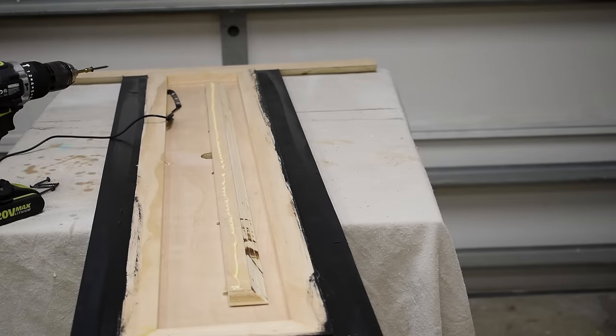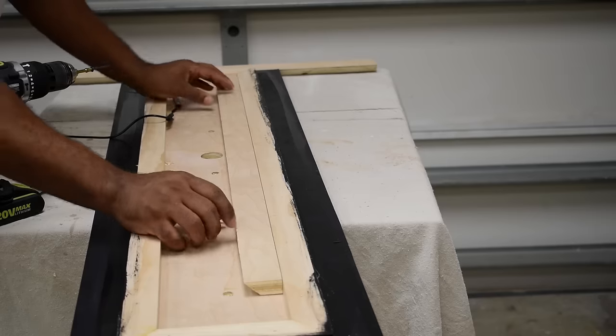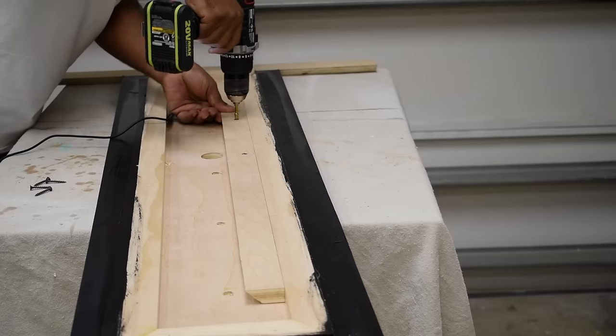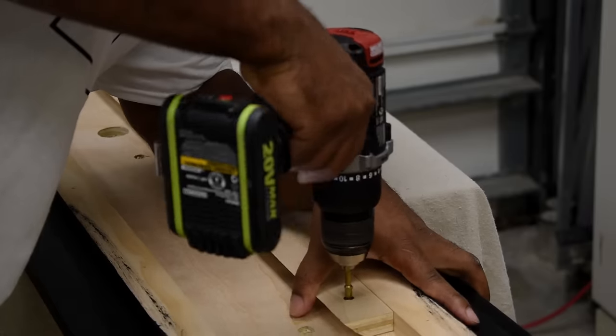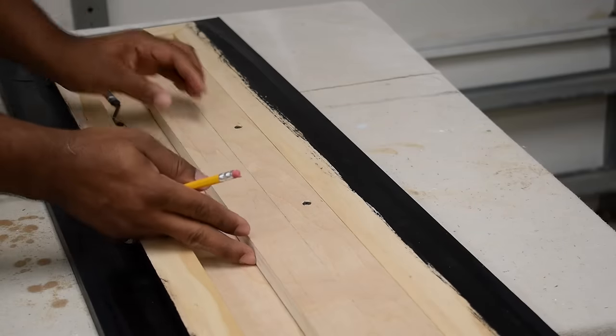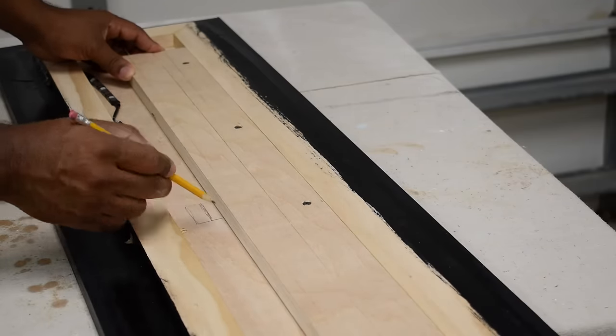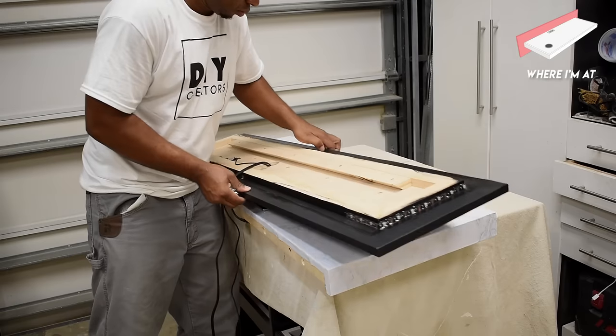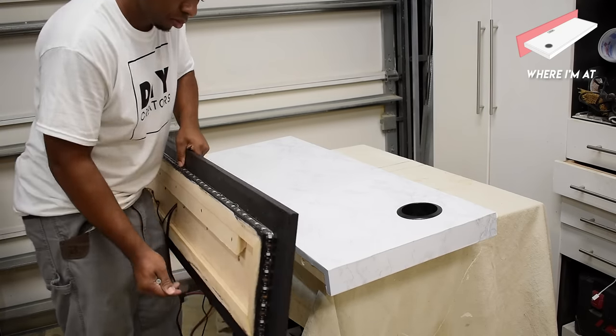This part of the French cleat system is going to be permanently attached to the back panel. Just keep your eye on the mitered end and don't mount this backward, because if the glue dries, it's going to be nearly impossible to remove it. I'll need to remove some of the material from the back panel. Doing so will allow the power cable to pass throughout the back and not interfere with the wall-mounted piece of the French cleat system.